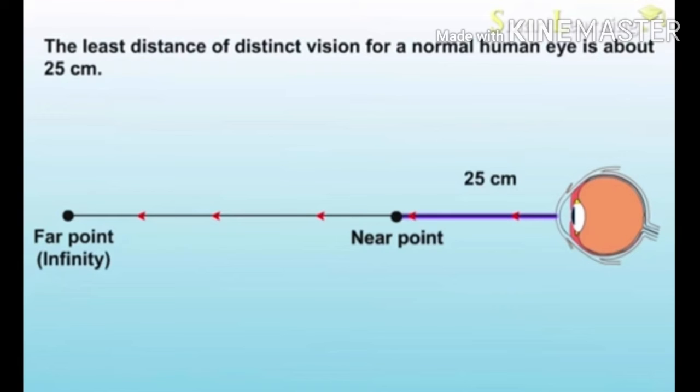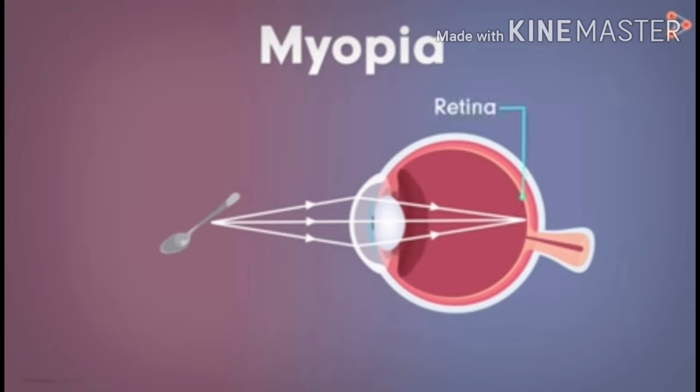The 25 centimeters is the near point, and the far point is known as infinity, up to which distance can be seen clearly. So this is a normal eye vision. The object is at the nearby point, so the light rays pass through the lens and fall on the retina, and the nearby object can be seen clearly.